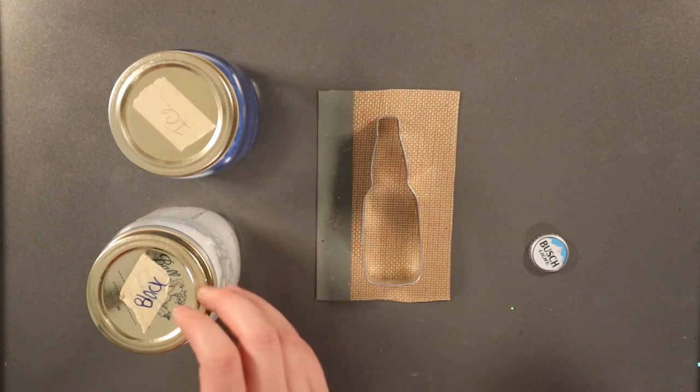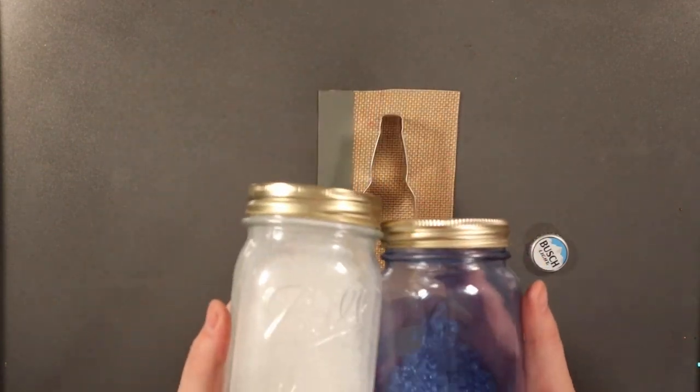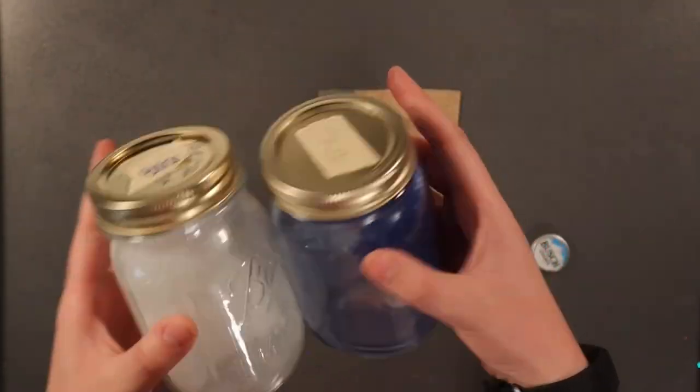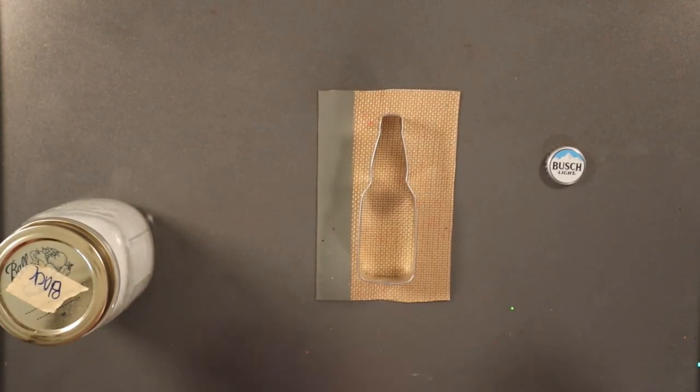Hey everyone, today we're making a beer bottle freshie. You'll need this beer bottle cookie cutter or a mold. You'll want white and then whatever color you want for the liquid, and then you'll need a bottle cap. I'll put the colors I use in the notes.